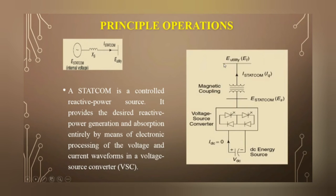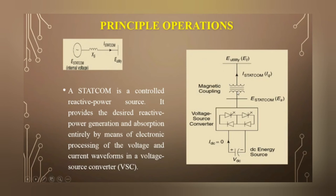This is a simple utility transmission line or bus. If we connect the StatCom like this, the DC supply source supplies DC voltage to the converter. That converter converts DC to AC, and that AC is connected to the bus through magnetic coupling.